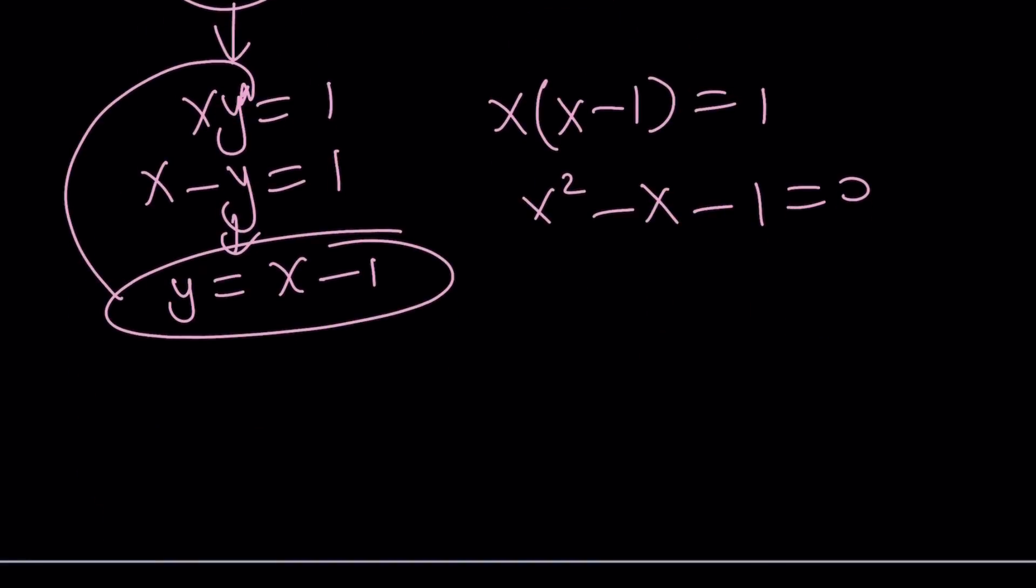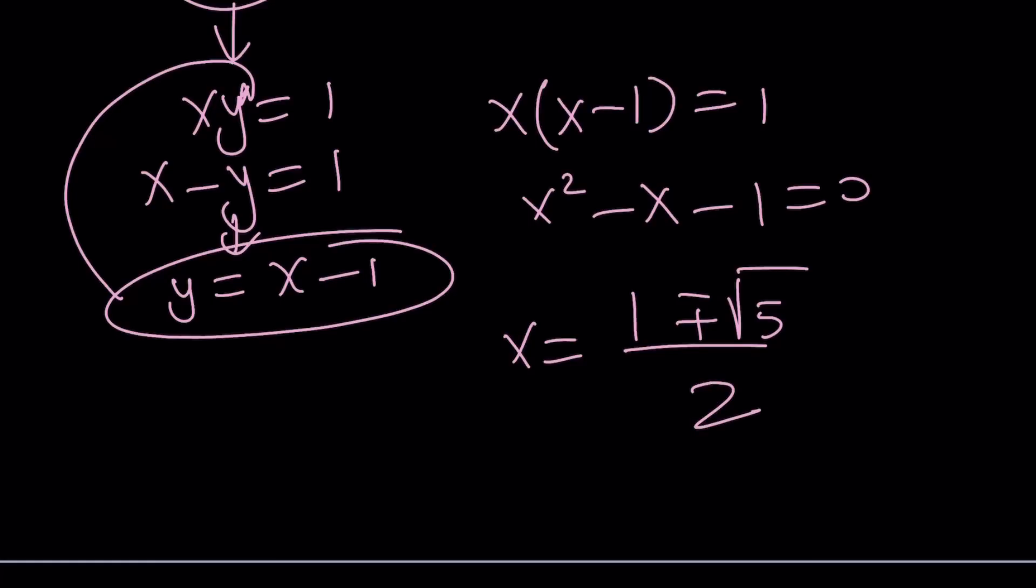And yes, the golden ratio. x equals negative b plus minus the square root of 5 divided by 2. Yes, one of them gives you the golden ratio. Beautiful, a golden result.